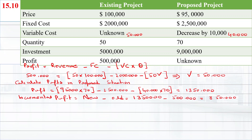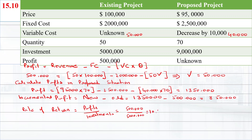After that, we will find the rate of return. Rate of return equals profits divided by investment. For the existing situation, rate of return is $500,000 divided by $5,000,000, that is 10%. For the proposed product, it will be $1,350,000 divided by $9,000,000, and that is equal to 15%.